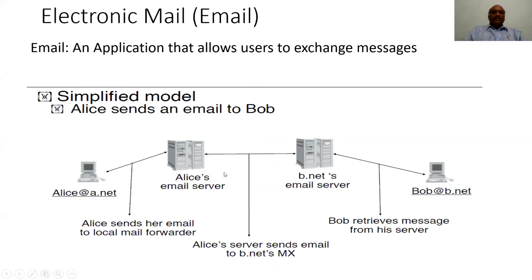A simple example of how emails are exchanged between two different users: a request comes from user Alice and is forwarded to the corresponding email server. The email server is software which transforms that email into a network-understandable format and sends it to another corresponding email server at the receiving side, which transforms it and forwards the message to the recipient.